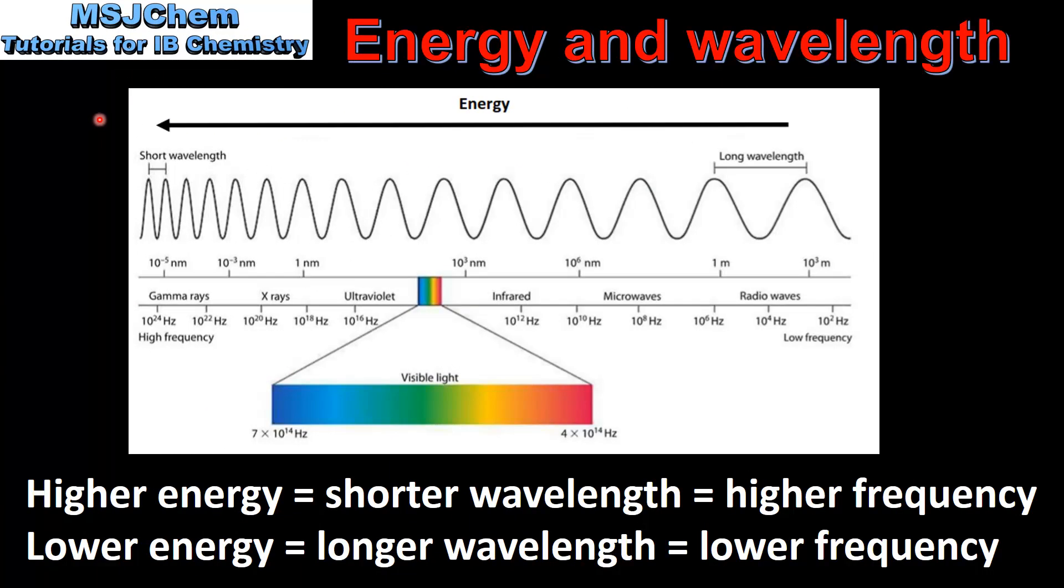Next we look at the relationship between energy and wavelength. Here we have the electromagnetic spectrum. The energy increases as we go from radio waves on the right to gamma rays on the left. We can also see that as we go from low energy to high energy the wavelength becomes shorter.